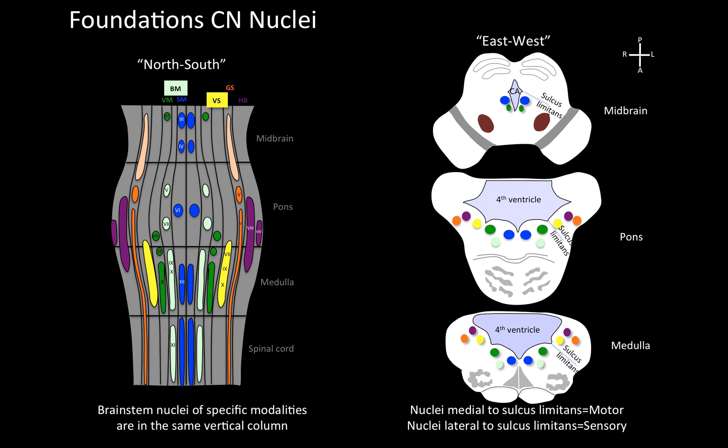So the foundations of cranial nerve nuclei: on one hand the north-south pattern, where brainstem nuclei of specific modalities are in the same vertical column; and on the other hand the east-west foundational principle, where nuclei medial to the sulcus limitans are motor and nuclei lateral to the sulcus limitans are sensory. Those are the foundations of cranial nerve nuclei in a nutshell.